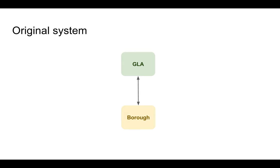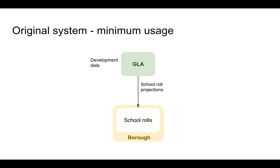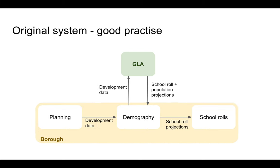In the minimum case, the GLA would provide the development data and would run the models, and then send the school roll projections to the school rolls officer in the borough. But many boroughs want to be able to input their own data — this would likely involve several departments. The planning department would provide the development data to a demographer who acts as a gatekeeper on the data and projections. They would send the data to the GLA, who would run the models and return the school roll and population projections.